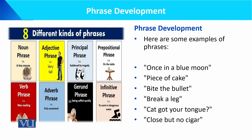Phrase development کی کچھ examples دیکھتے ہیں: once in a blue moon، piece of cake، bite the bullet، break a leg، cat got your tongue۔ Noun phrase: a tiny mouse؛ adjective phrase: very tall؛ adverbial phrase: suddenly by tragedy؛ prepositional phrase: on the table, under the table؛ verb phrase: was reading — یہ action بتاتی ہے؛ adverb phrase: only occasional؛ gerund phrase: eating selfishly quickly؛ infinitive phrase: to swim in dangerous water۔